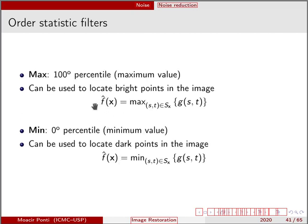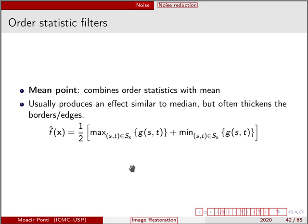The maximum filter can be used to locate bright points in the image and then make the image brighter. And the minimum filter can be used to locate dark points in the image and then if I just use the minimum filter, the image will become darker. But by combining those two, by taking the average between maximum and minimum, we can have a combination of order statistics and mean and then producing an effect that's similar to the median, but it often thickens the borders or edges.